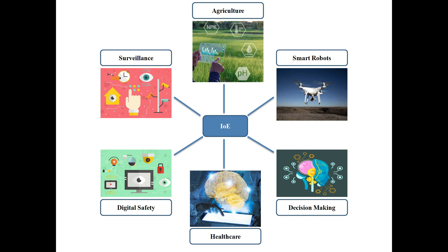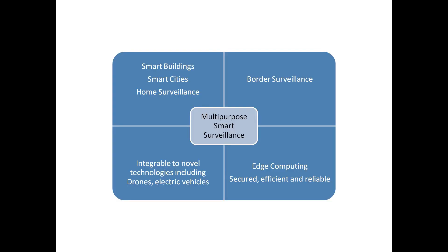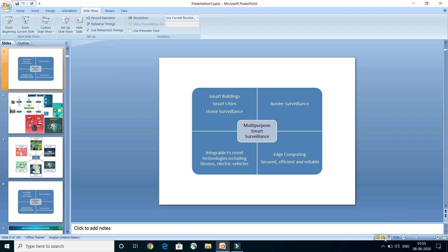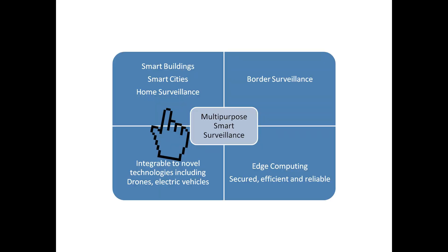These systems have made our lives so easy, and that's why Internet of Things or Internet of Everything has become so important today. Now we are going to discuss an example of an IoT system called a multi-purpose smart surveillance system. The top-left block shows the applications where it can be used, including smart cities, smart buildings, and home surveillance.